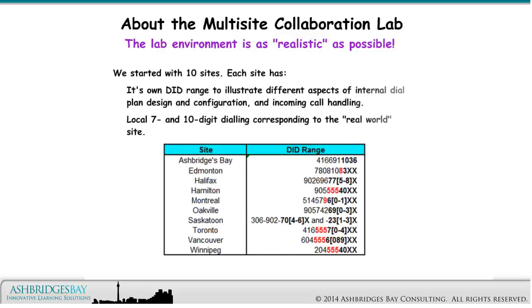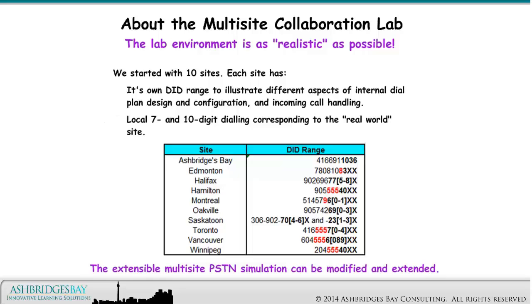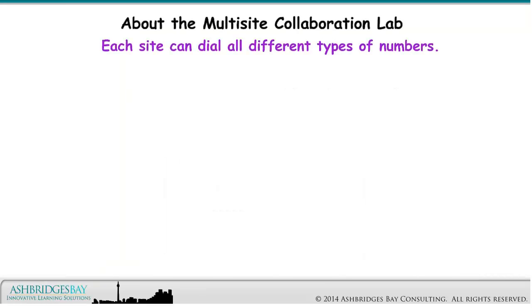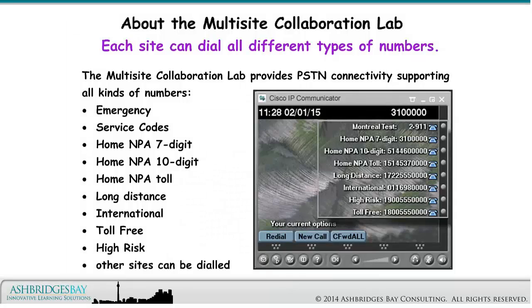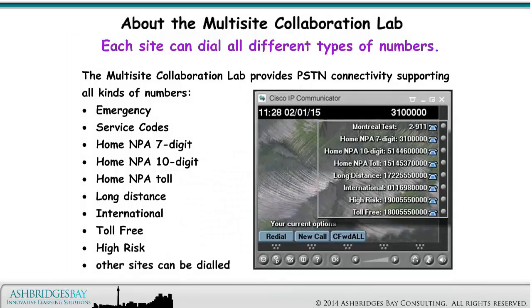We started with 10 sites. Each site has its own DID range to illustrate different aspects of internal dial plan design and configuration, and incoming call handling. Local 7 and 10 digit dialing corresponding to the real-world site. The extensible multi-site PSTN simulation can be modified and extended. The Multi-Site Collaboration Lab provides simulated PSTN connectivity, allowing a comprehensive dial plan to be built for Enterprise 20. Each site can dial many different kinds of numbers.